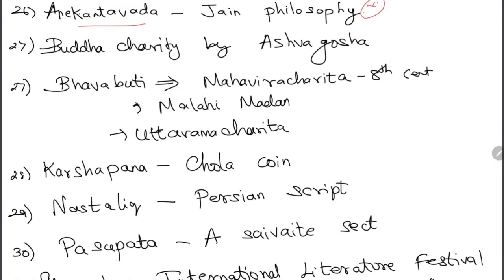Buddhacharita was written by Ashvagosha. A clue to remember: the life of Buddha is connected with horses in many places — Ashwa means horse, Gosha means sound, giving Ashvagosha. Bana Bhatta — a key writer — wrote Mahaviracharita, Uttararamacharita, and Malatimadhava in the 7th century; Bhavabhuti was already asked in UPSC.